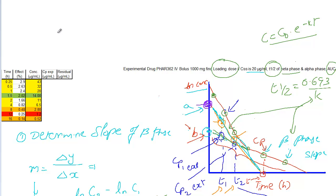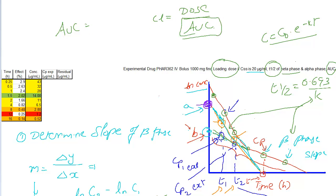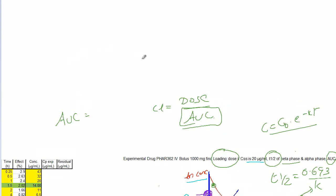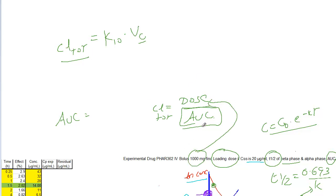The last thing is to find AUC. Recall that clearance equals dose over AUC. First, find clearance total, which equals K10 times Vc — both of which we already have. Then rearrange to get AUC equals dose over clearance total.